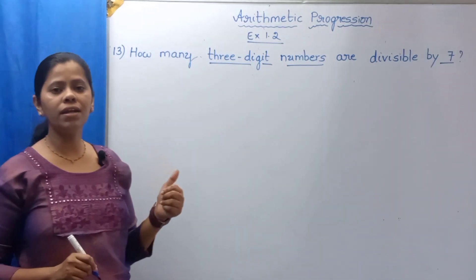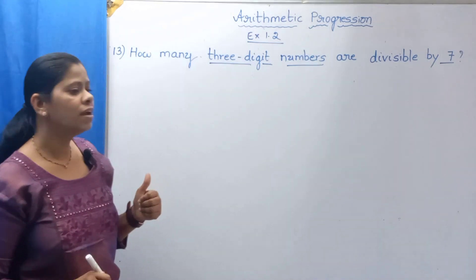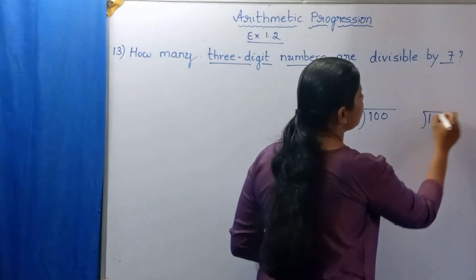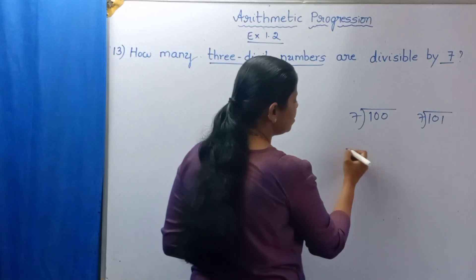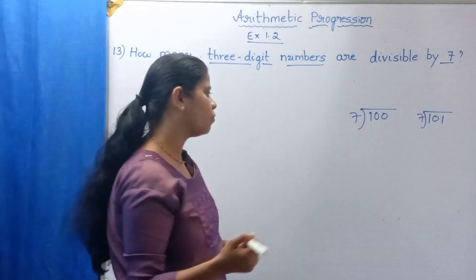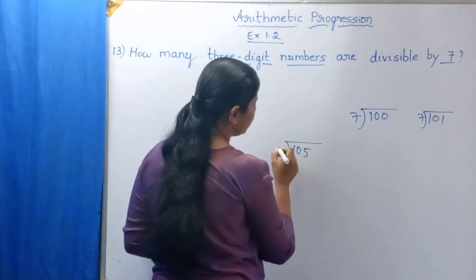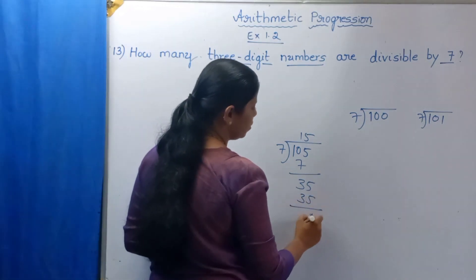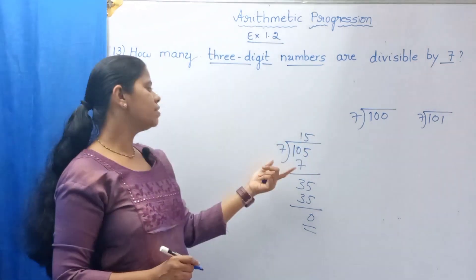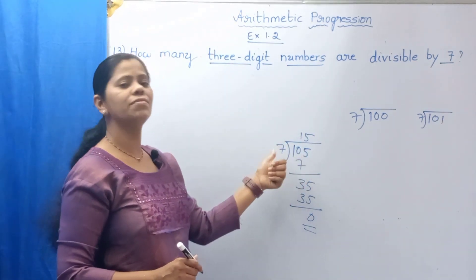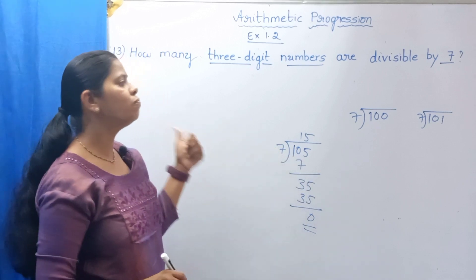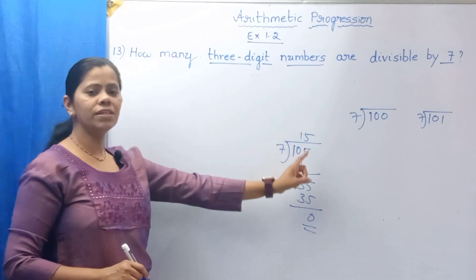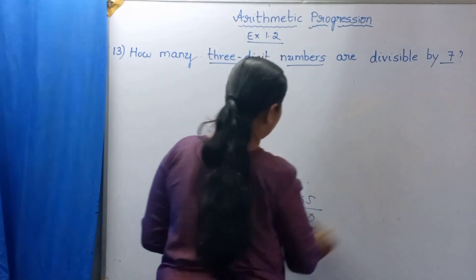100 is not divisible by 7, because when you divide 100 by 7 you do not get remainder 0. Similarly, 101, 102, 103, 104 — none give remainder 0 when divided by 7. Now let us check 105: 7 × 15 = 105. So 105 is divisible by 7. Therefore, 105 is the first 3-digit number divisible by 7. The first term A is 105.